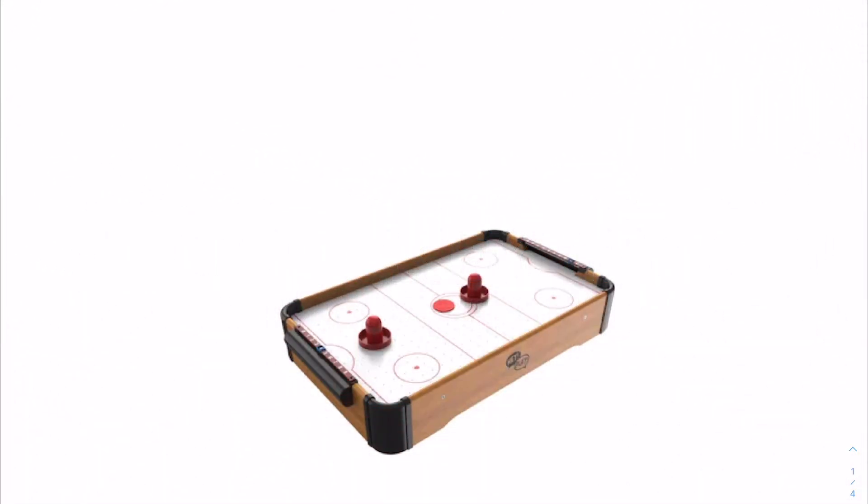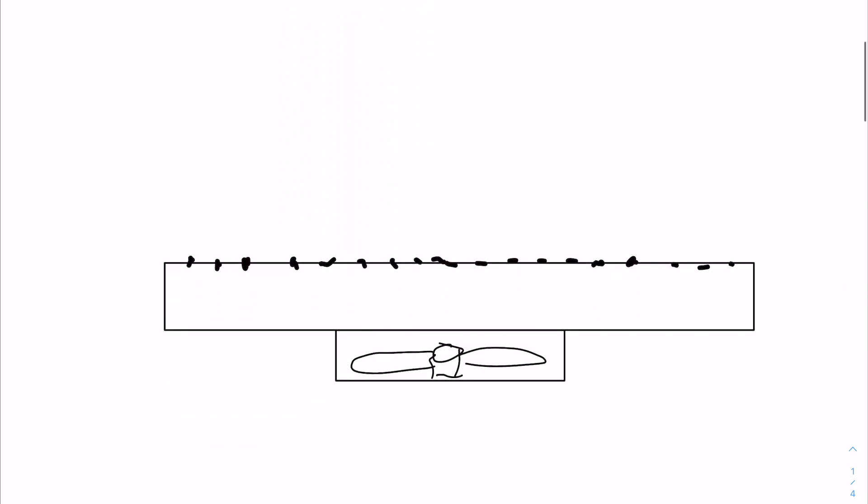This is the free body diagram of a miniature air hockey table. A miniature air hockey table is essentially a wooden box with holes that has a fan underneath. If we draw a cross-section of it, it'll look something like this: essentially air is pushed in through the fan and eventually out the holes, which will then interact with the puck and the sliders.